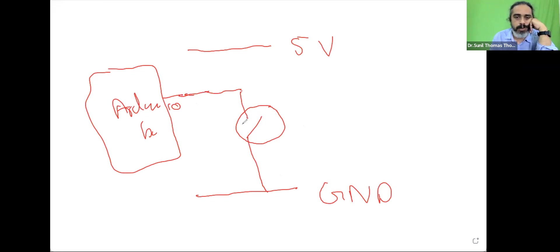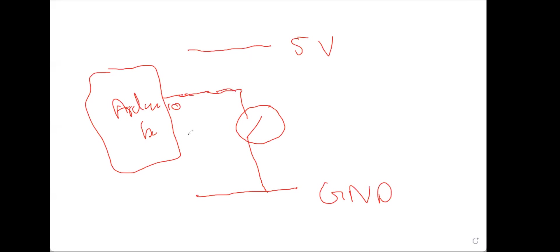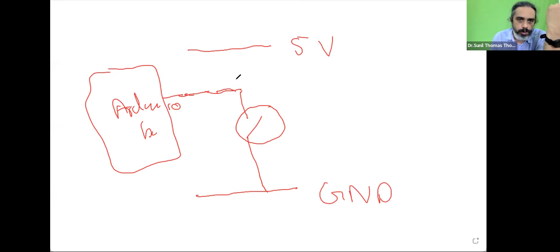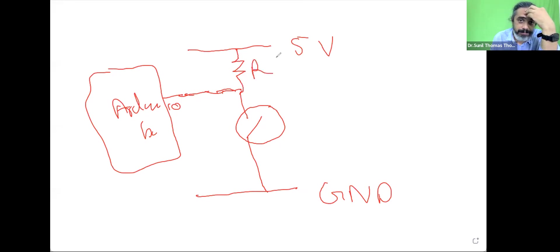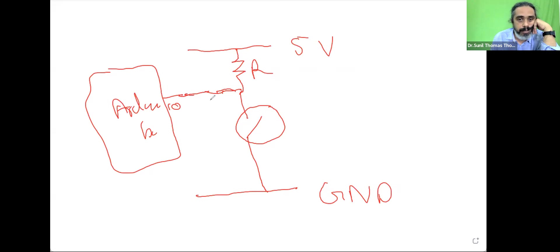When the switch is open, we do not know the status of the pin. Ideally when the switch is open this pin should get 5 volts, and when closed it should get 0 volts — high when open, low when closed. But your 5 volts source is somewhere here. So if you want the circuit to work correctly, you will put a resistor here. When the switch is open, the 5 volts will be connected to this pin. When the switch is closed, the Arduino pin will be connected to ground.